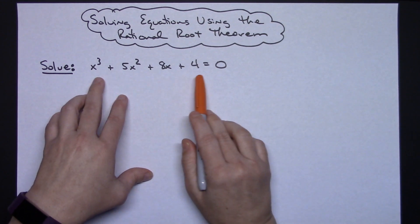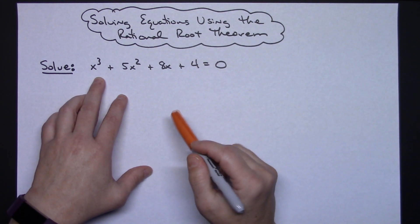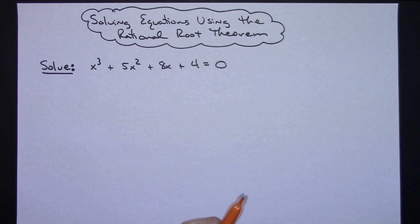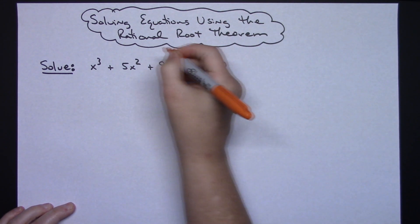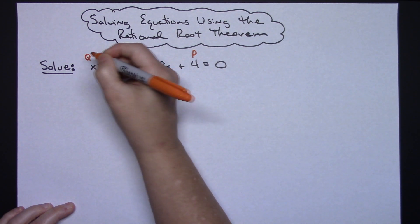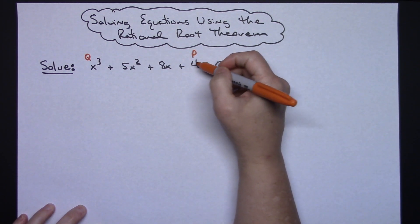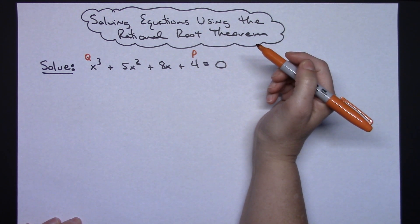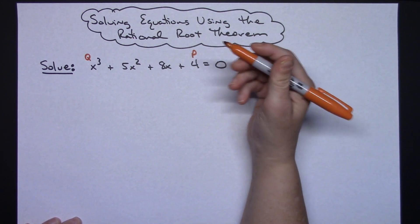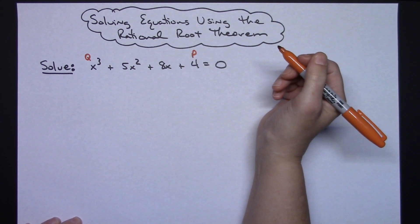But if it doesn't factor by grouping then you're going to have to try something else. Now the rational root theorem does a thing with p's and q's. They usually call this p and they usually call the coefficient here q, and then you do plus or minus all your factors of p over q, and that will be one of those are hopefully going to be a root of the equation.